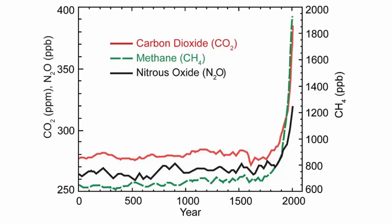This graph shows the levels of carbon dioxide, methane, and nitrous oxides in Earth's atmosphere over the past 2,000 years. Notice the large jump after 1750, coincident with the start of the Industrial Revolution and the burning of fossil fuels.